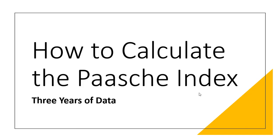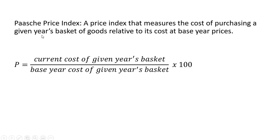Hello, in this video we're going to look at how to calculate the PASH index using three years of data. The PASH price index is a price index that measures the cost of purchasing a given year's basket of goods relative to its cost at base year prices. Here is the formula: current cost of a given year's basket divided by the base year cost of a given year's basket, all multiplied by 100.